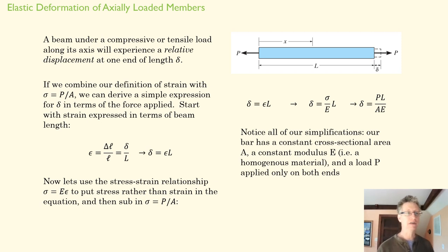If we combine our definition of strain with stress in an axial member, the force P over that cross-sectional area, we can come up with a simple expression for delta in terms of the force applied. So, we'll say strain, our definition of strain is delta over L, the deformation over the length of the beam.